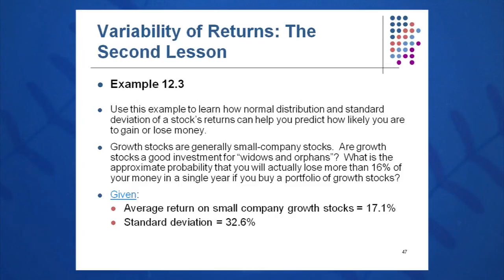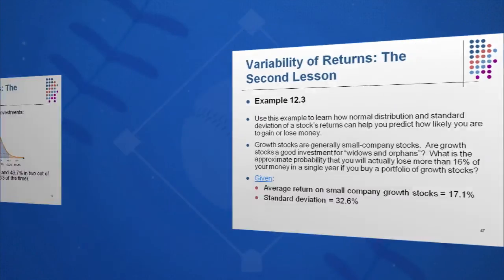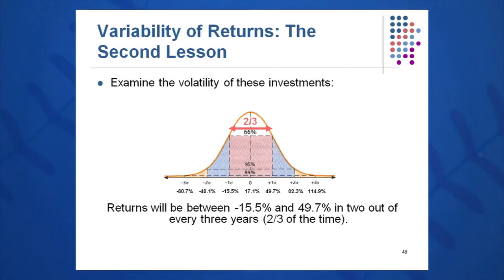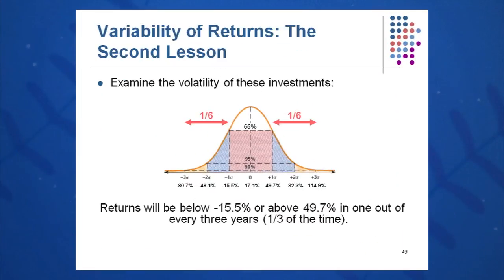In Example 12.3, we use these statistical processes to assess how likely you are to lose or gain money. Growth stocks are generally small company stocks — are they a good investment for widows and orphans? The average return on small company stocks is 17.1%, with an average standard deviation of 33.3%, making them highly volatile. Plus or minus one standard deviation means about 66 to 68% of future returns will fall between minus 15.8% and plus 50.8% — two out of every three years.